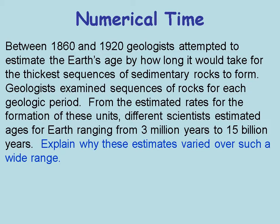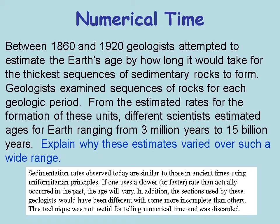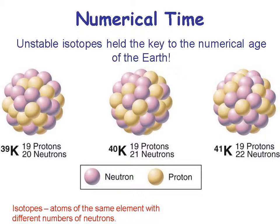Between 1860 and 1920, geologists attempted to estimate the Earth's age by how long it would take for the thickest sequences of sedimentary rocks to form. They examined sequences from each geologic period and got widely different estimates — from 3 million to 15 billion years. It didn't work because if one uses a slower or faster rate than actually occurred, the age will vary, and the rock sections used were incomplete. There was just too much variation — sedimentation rates aren't well-constrained enough to be a reliable tool.